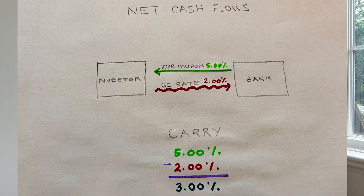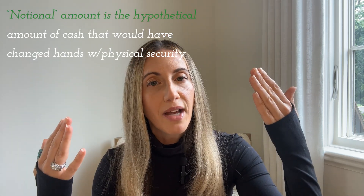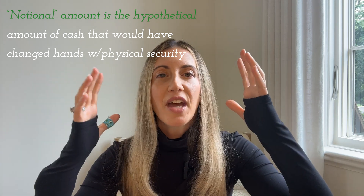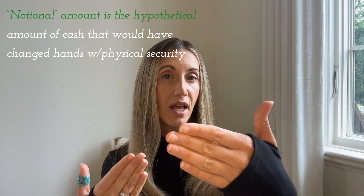The difference between these two rates is my cost of carry on the trade. Now, this can be a balance sheet intensive operation. So what if I didn't want to actually scrounge up a hundred million dollars this way, but I still wanted to replicate those cash flows? I would enter into a receive-fixed interest rate swap. All this interest rate swap is, is a synthetic bond funded at SOFR. I receive a fixed-rate coupon and pay out a floating funding rate. The amounts of each of those payments are based off of a notional amount of a hundred million dollars — a hypothetical, imaginary amount of cash that would have been exchanged up front were I actually buying or selling a physical security.